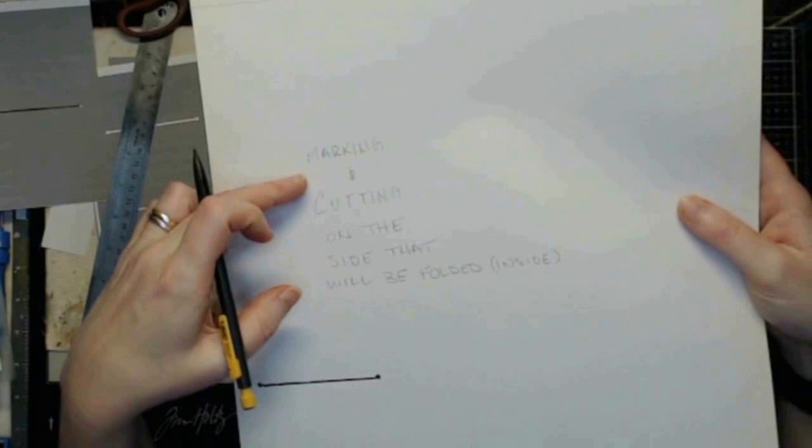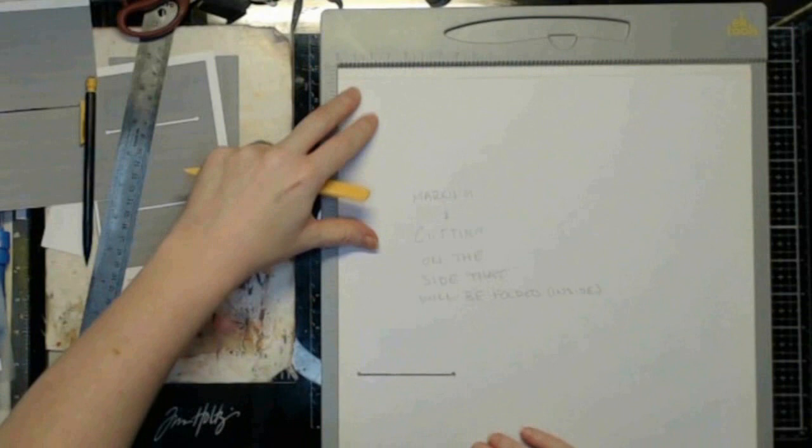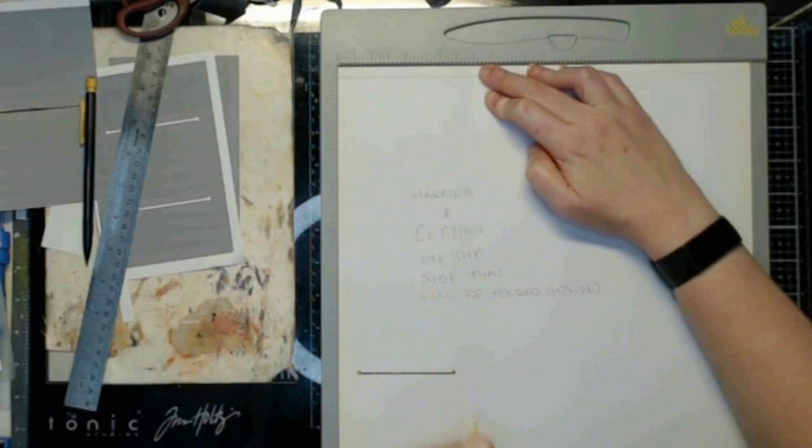Because then they will just be folded inside when the folio gets folded up. Just like that, I just wrote marking and cutting on the side that would be folded inside. Now, for the score lines. Very simple.